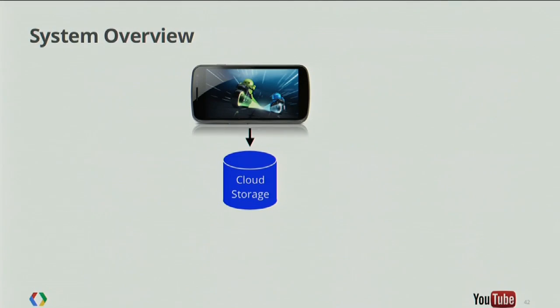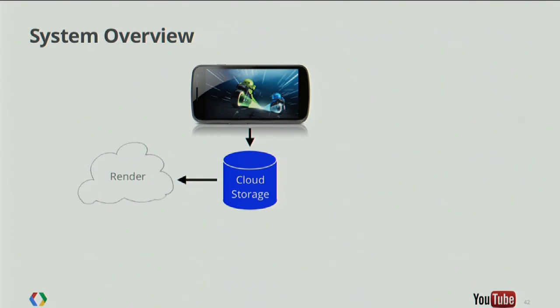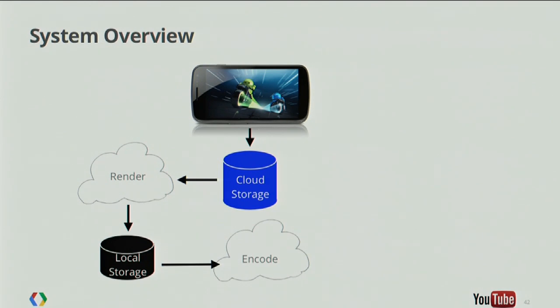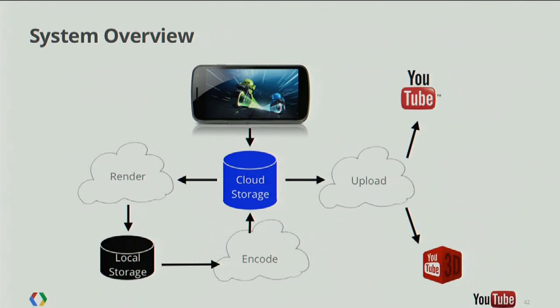From the cloud, the data goes through a render step. After it gets rendered, the frames and sounds and other assets get stored locally on the machine doing the rendering. From there they get encoded into the final video that needs to go to YouTube. That final video gets stored back in the cloud, and then of course we upload it to YouTube — and possibly even YouTube 3D, if that's something we wanted. This video you see on the client there could allow 3D. Our proof of concept didn't get that far; we were more concentrating on getting it to the cloud, doing the rendering and encoding, rather than the game itself.